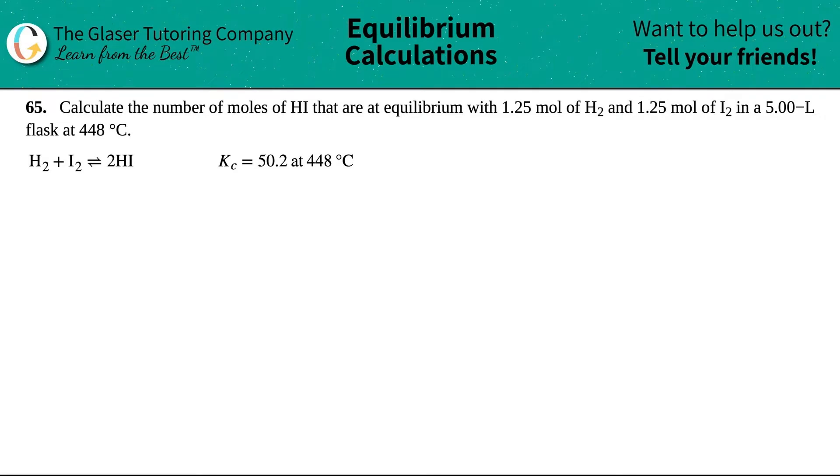Number 65. Calculate the number of moles of HI that are at equilibrium with 1.25 moles of H2 and 1.25 moles of I2 in a 5.00 liter flask at 448 degrees Celsius.